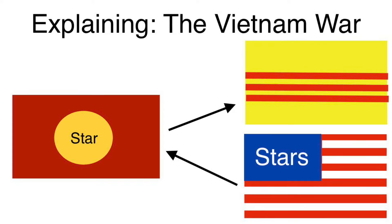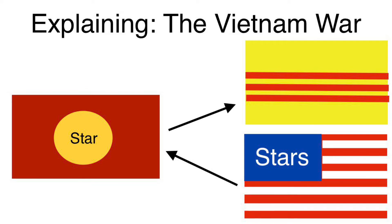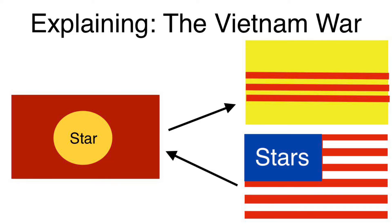The United States believed in something known as the Domino Theory, which believed that if Vietnam fell to the communists, then surrounding countries like Laos, Cambodia, Myanmar, and Thailand would also become communist. The United States would send large amounts of money to the French in an attempt to help them win the war, but despite this,